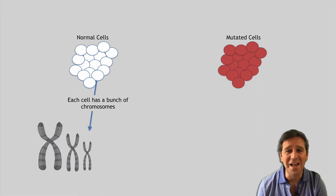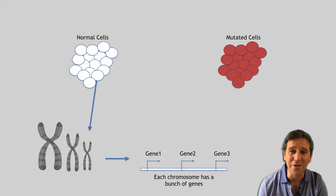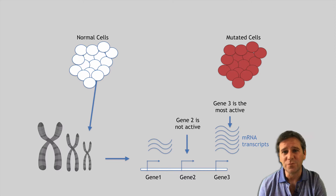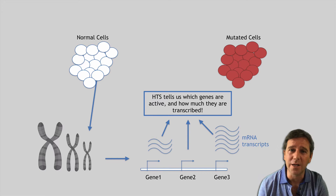Each cell, assuming they're human in our example, has a bunch of chromosomes and each chromosome has a bunch of genes — shown schematically here as gene 1, gene 2, and gene 3 along the DNA. Some of these genes are going to be more active than others, with messenger RNA transcripts from some genes more abundant than others, shown with these squiggly lines. For example, gene 3 is the most active here and gene 2 is not active at all. What high-throughput sequencing analysis aims to tell us is which genes are active and how much they're transcribed.